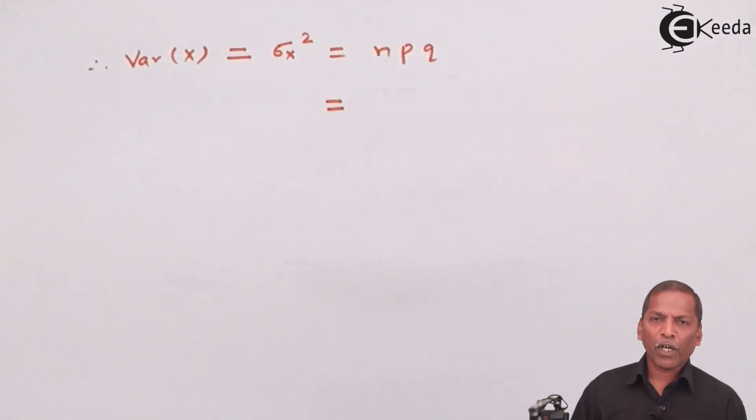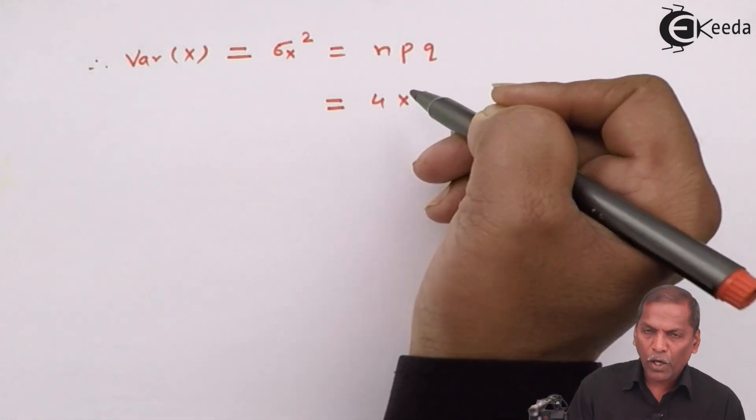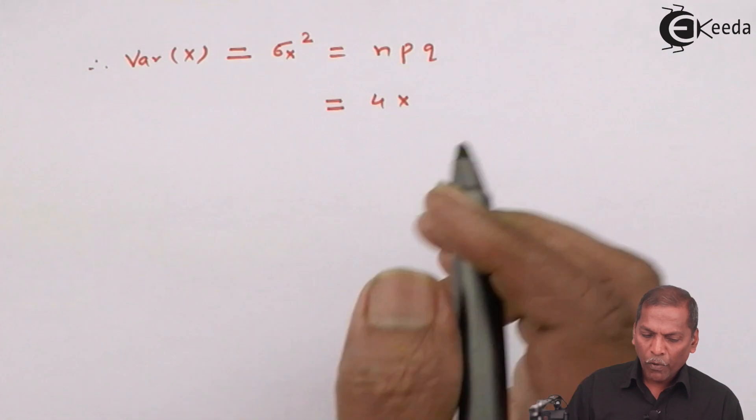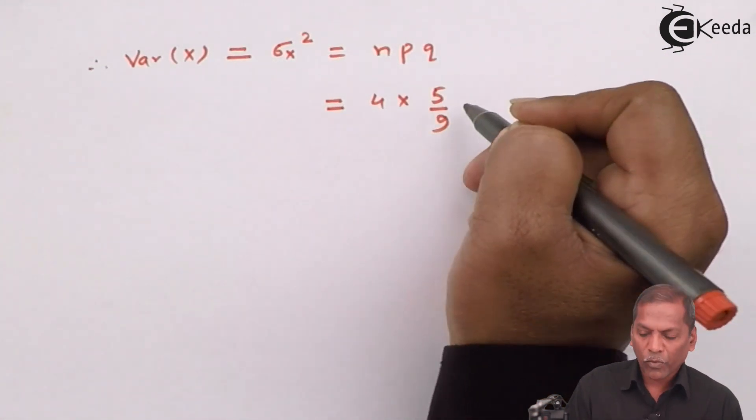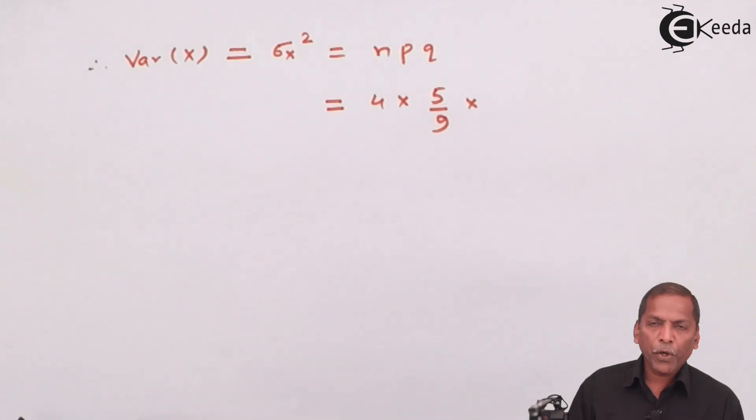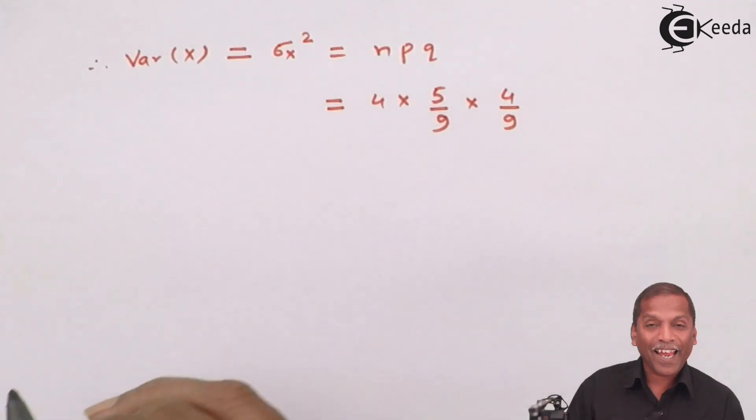So, that further equal to, for N, we write 4 into, for P, we substitute 5 upon 9 into, for Q, we substitute 4 upon 9.